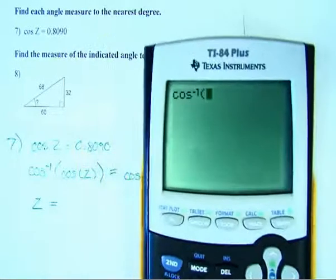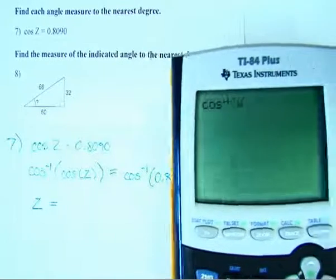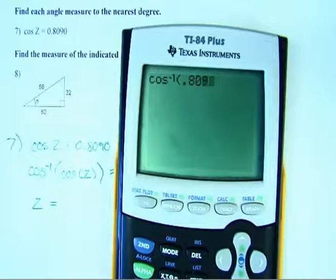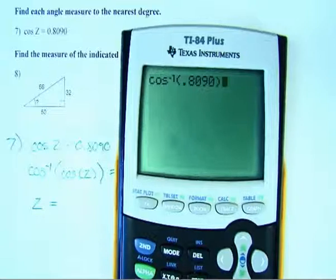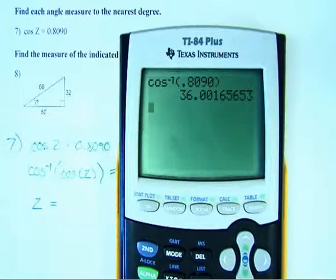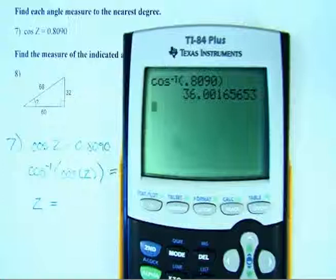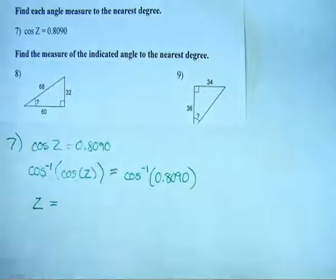And then I just have to plug my value in. So I substitute that in for the argument of that function and hit enter. And it tells me that the inverse cosine of that is rounding off 36 degrees.